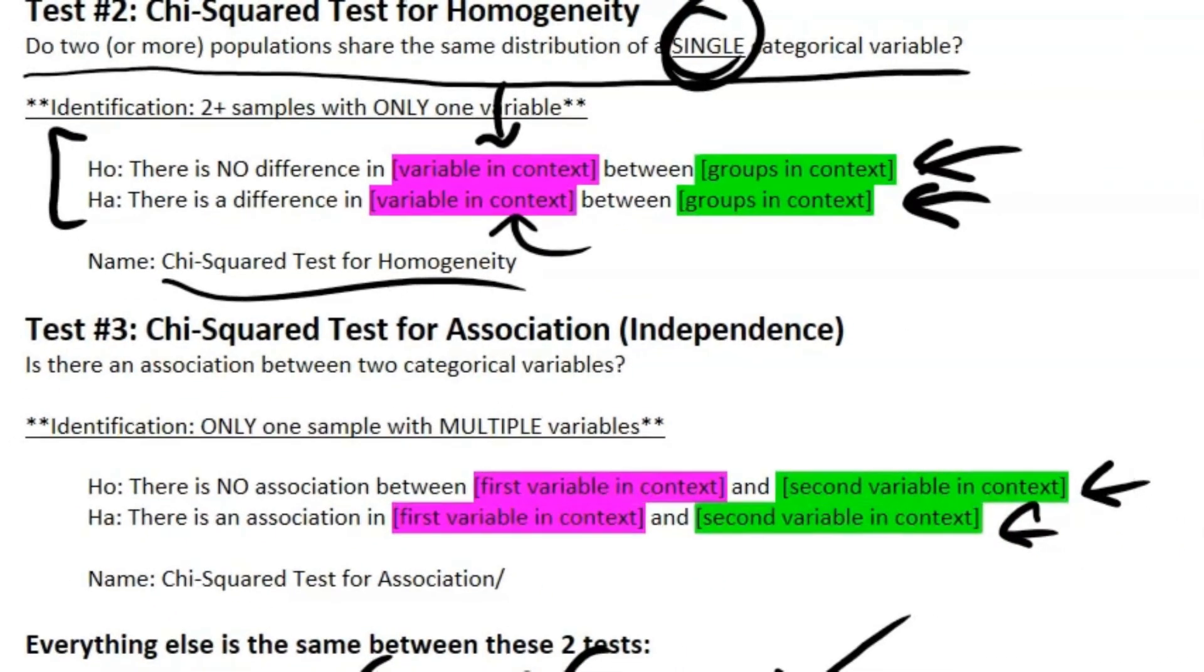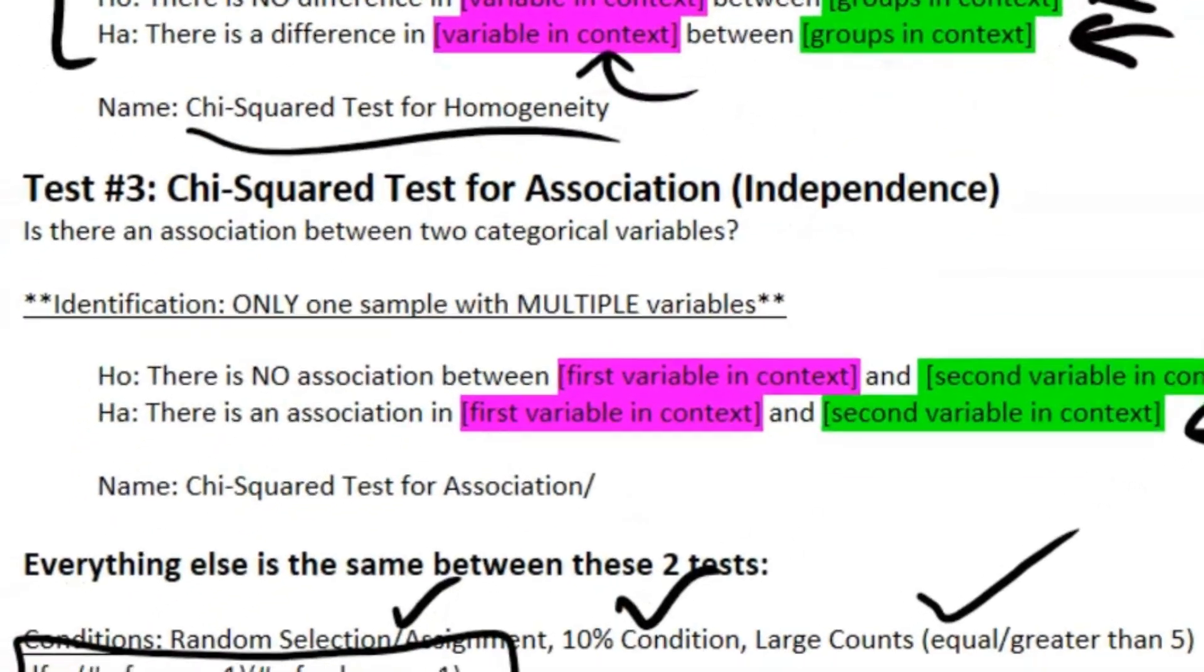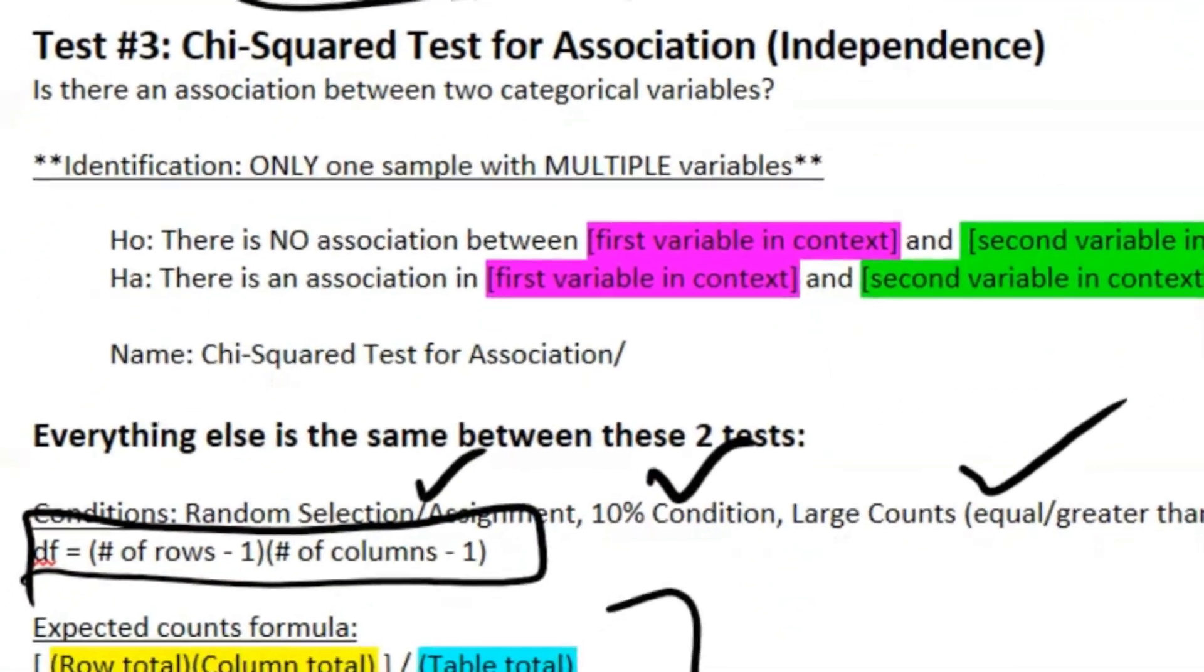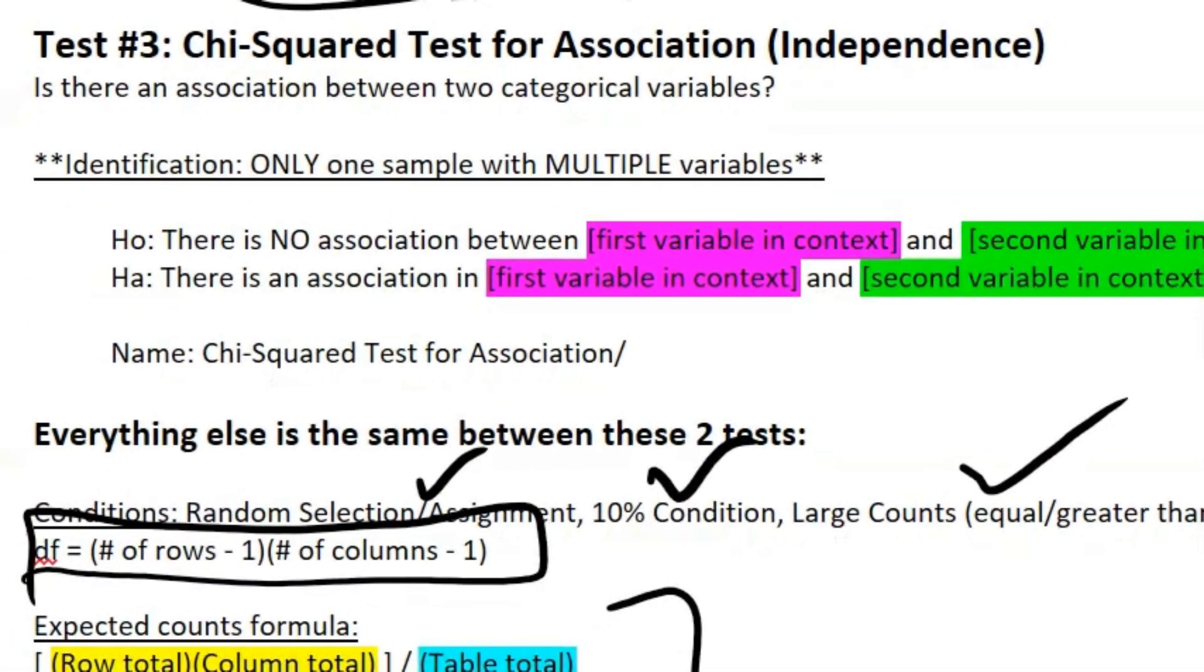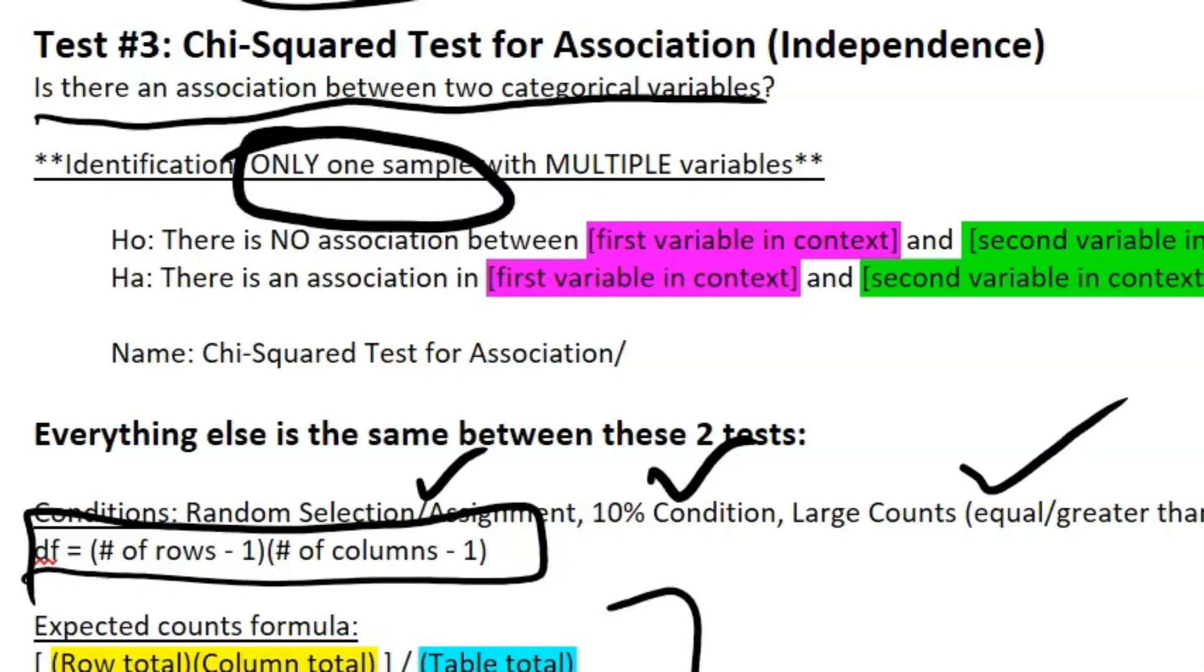To cap the video, we're just going to talk about the other stuff for our chi-squared test for association or independence. The key question here is: is there an association between two categorical variables? So now we have only one sample, but with multiple variables.